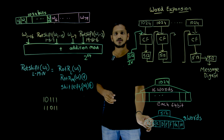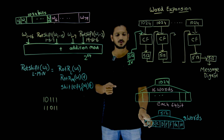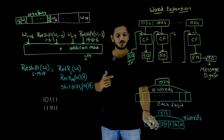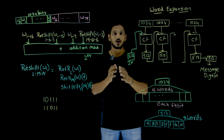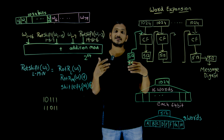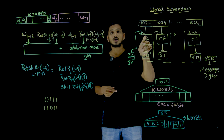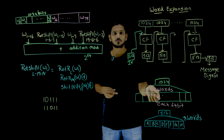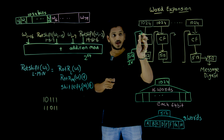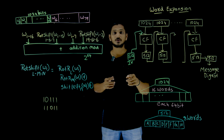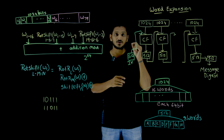Each word is of size 64 bits, and these output words are labeled as a, b, c, d, e, f, g, h. Everything is in the form of words. Similarly, inside this compression function, the 1024 bits is actually divided into 80 words, each of size 64 bits.